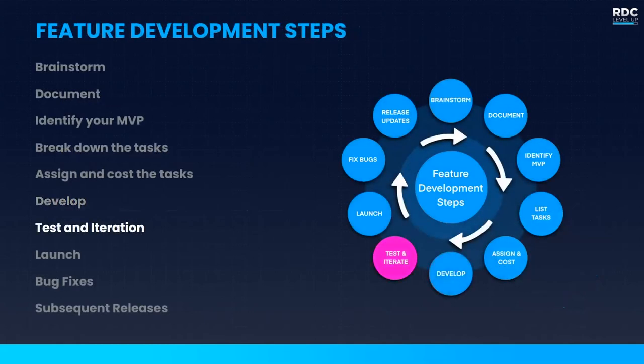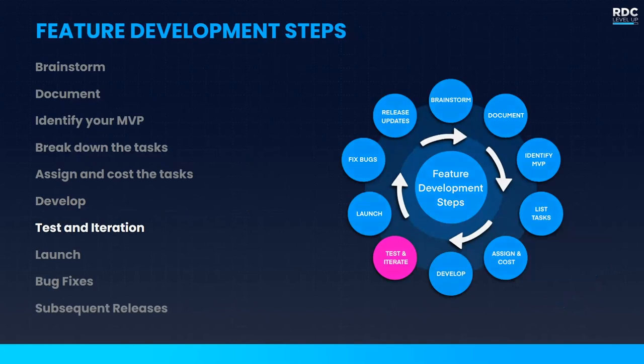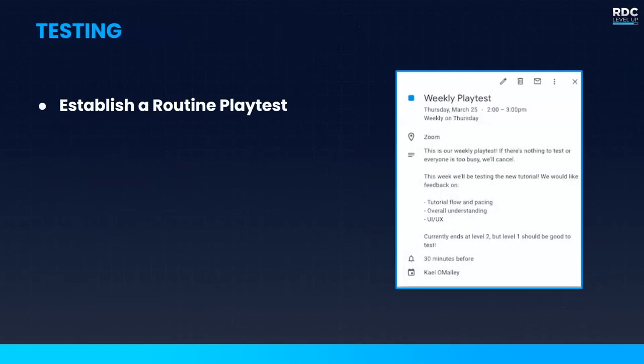Once we've gotten into a playable state, we want to move on to testing and iteration. For testing, establish a routine play test — this is great for seeing overall development progress and detecting issues earlier. Set expectations for your play test — never just go in and say 'okay, go.' Establish what is being play tested, what new features are in the build, and make sure you're focusing everyone's feedback on a specific system. These are meant to get the most value out of them, so don't waste everybody's time with arbitrary play tests.